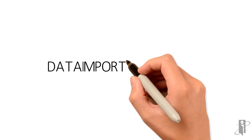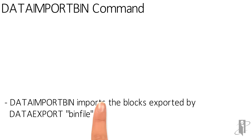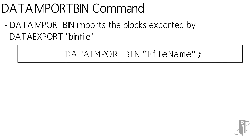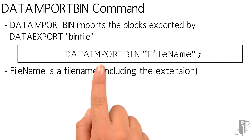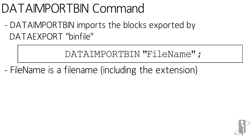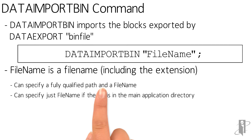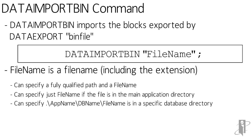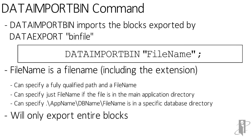Data import bin will take the export that you did using bin file and pull it back in again. This one is even simpler because all we have to do is say data import bin and then the file name. We use the exact same path delineator to tell it where the file is actually located. And because data export bin only exported whole blocks, data import bin only imports whole blocks.